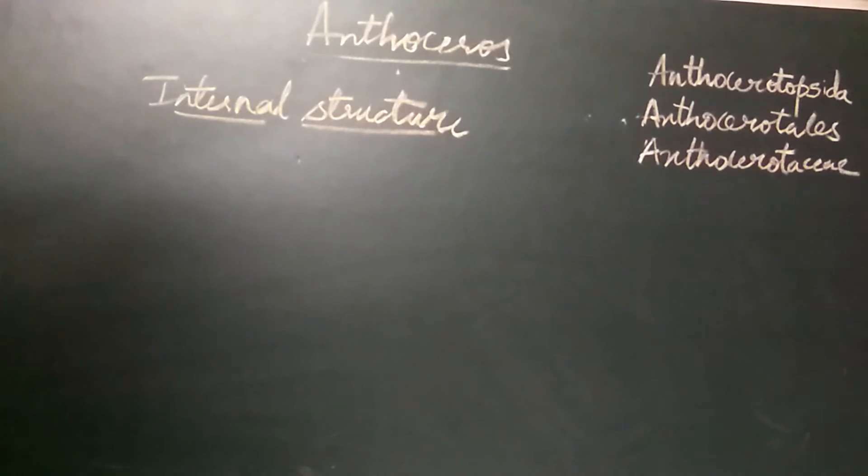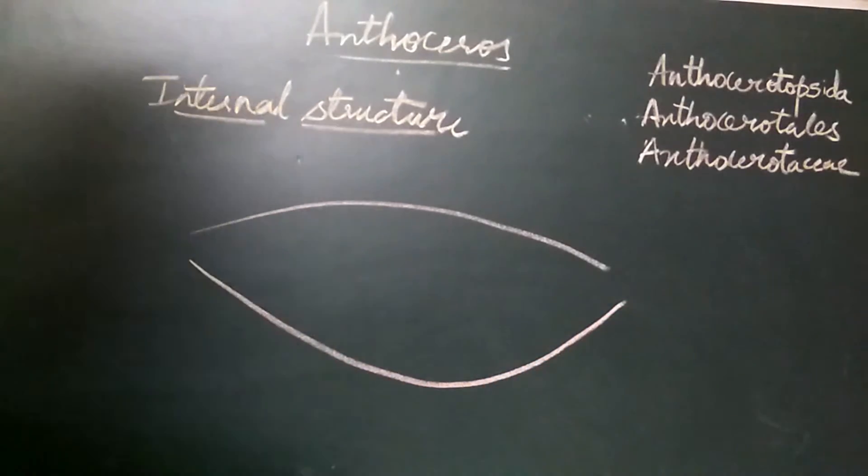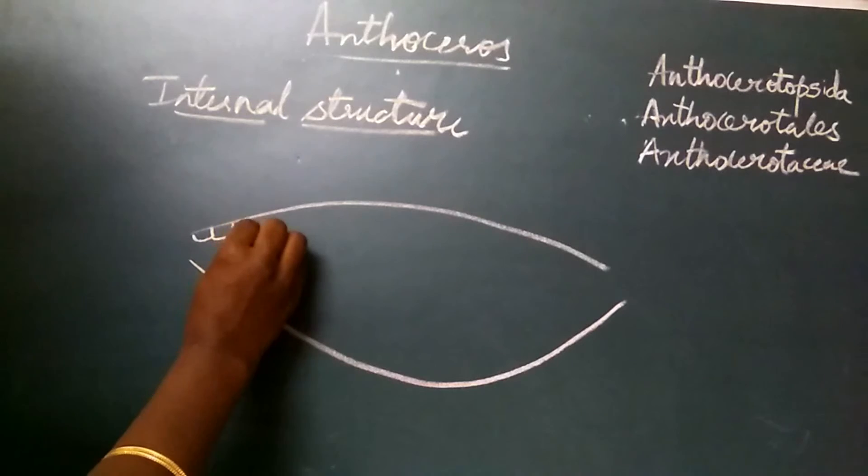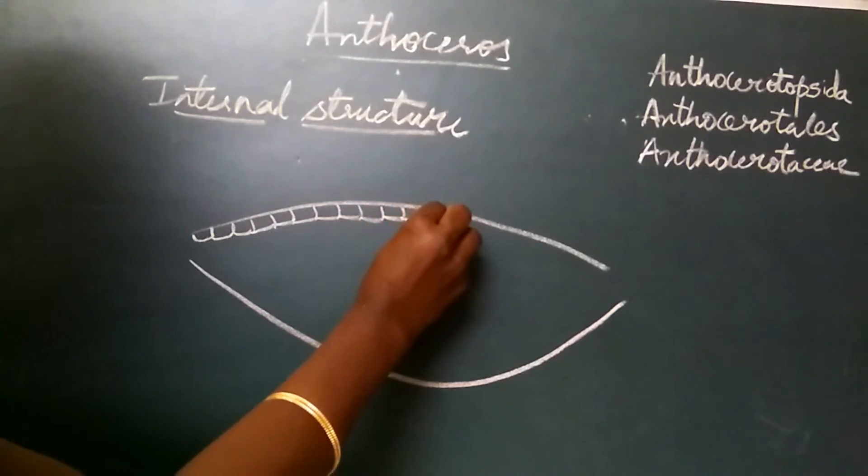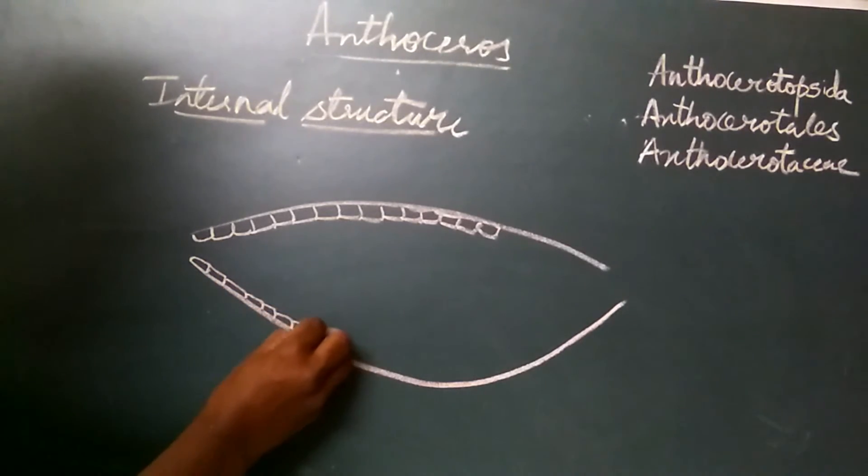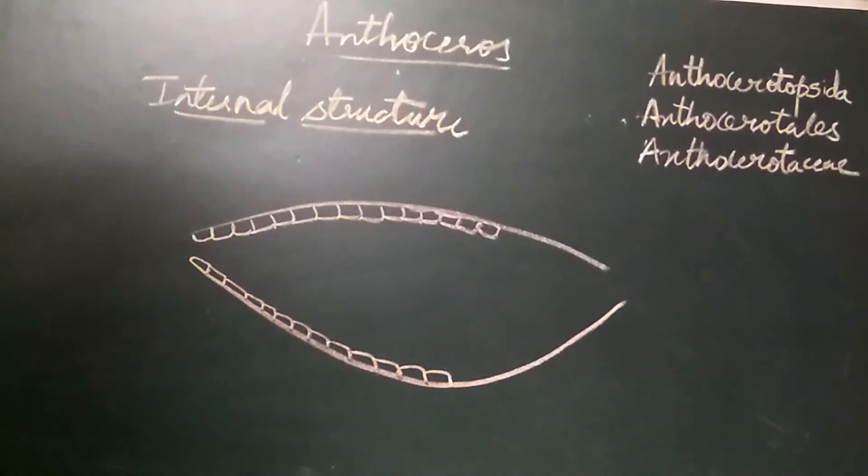The internal structure of the thallus of Anthoceros is simple, without any cellular differentiation. All the cells are similar in structure. The outer layer is the epidermis. The epidermis is made up of small cells which are distinct from the other cells of the thallus. These cells are distinct, continuous, and are smaller in size.